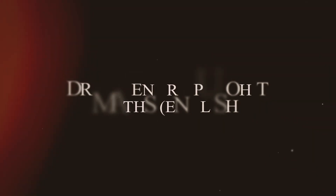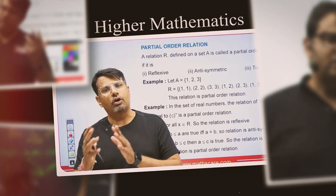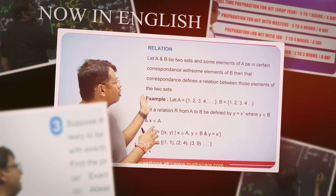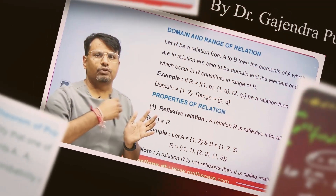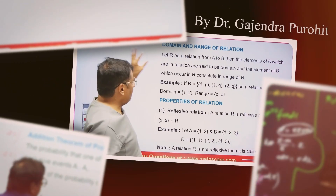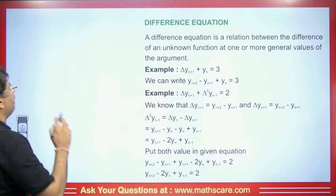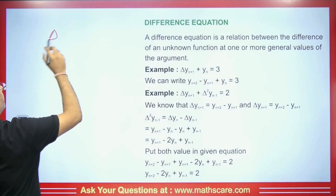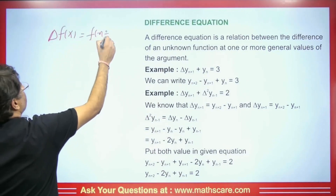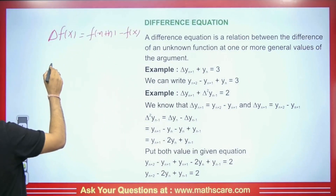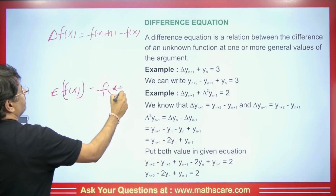Let's start. First of all, there are two types of operators which are very useful. We have a forward operator, which we can write as del f(x) = f(x+h) - f(x). The other operator we have is the shift operator. This means that it shifts the function forward by one position.